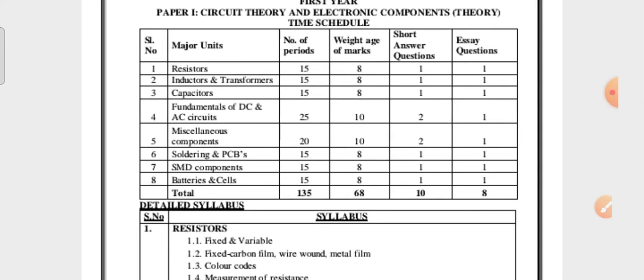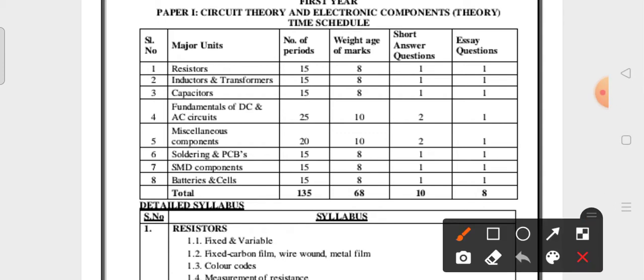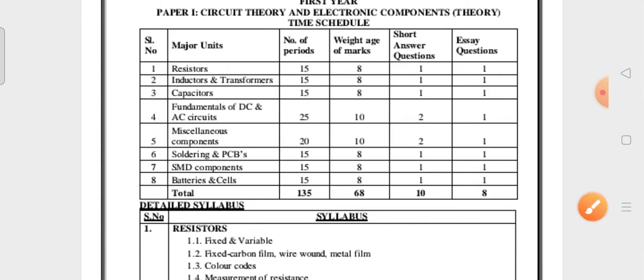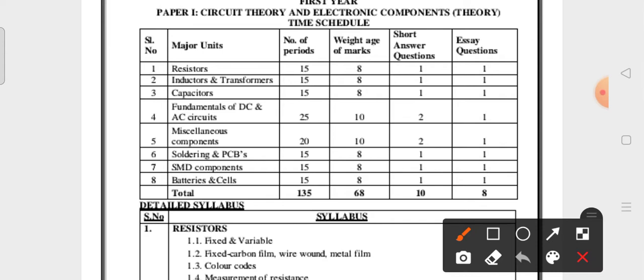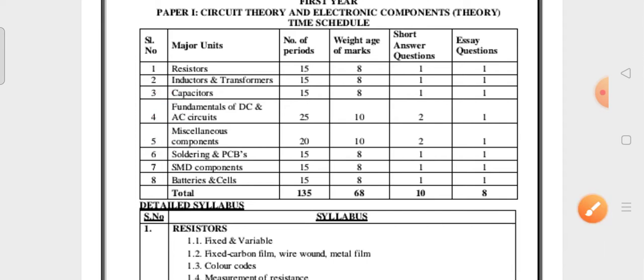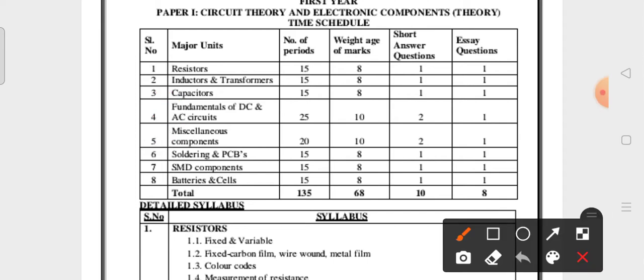Let me go through the syllabus of Paper One. If you see the Paper One syllabus, you'll see the weightage of marks. There are eight units in Paper One. Among these eight units, the fourth and fifth units are very very important. This is the fourth unit and this is the fifth unit — fundamentals of DC and AC circuits and miscellaneous components.